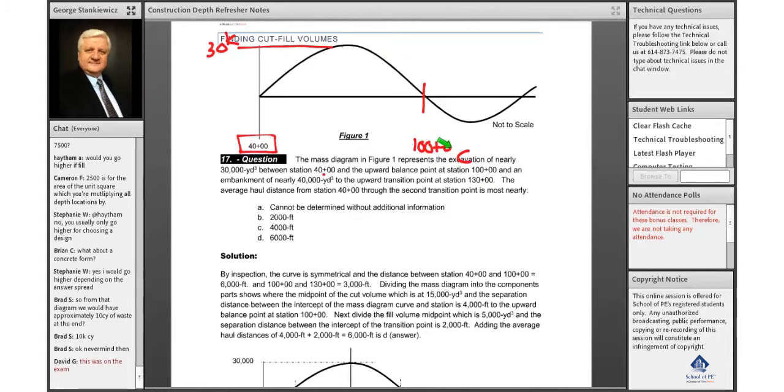Because that's the upward balance point. What does that mean? Well, upward means we're going up. We read from left to right and our number line goes from left to right. So if we're at 40 here, we're going to go upward and we're moving from left to right, and that's why it's 100. So we have 6,000 feet of work. And then there's an embankment of nearly 40,000 cubic yards to the upward transition point at station 130. So we have an embankment or a fill, so it goes to the halfway point. We're visualizing this, and that station is 130.